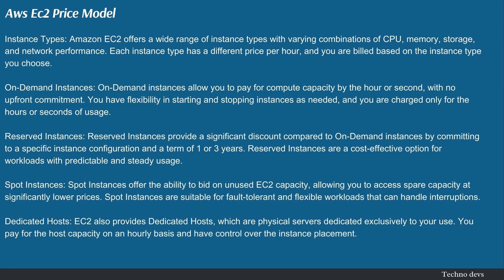AWS EC2 Price Model: Amazon EC2 offers a wide range of instance types with varying combinations of CPU, memory, storage, and network performance. Each instance type has a different price per hour, and you are billed based on the instance type you choose. On-demand instances allow you to pay for compute capacity by the hour or second, with no upfront commitment. You have flexibility in starting and stopping instances as needed, and you are charged only for the hours or seconds of usage.